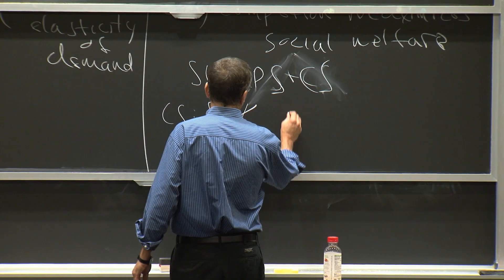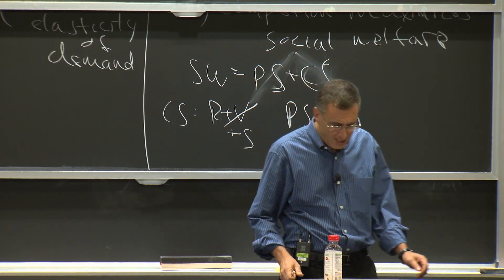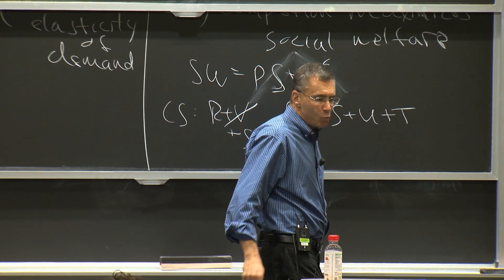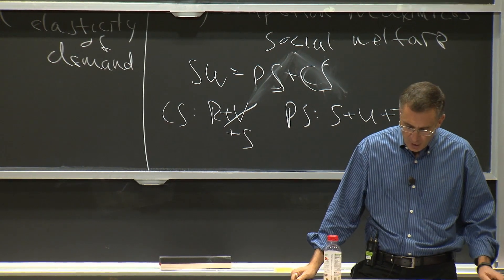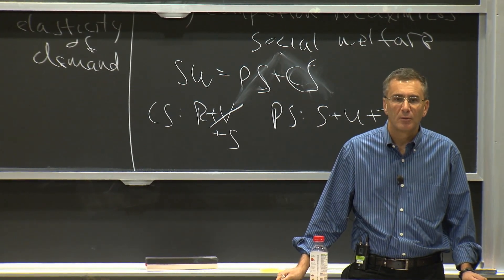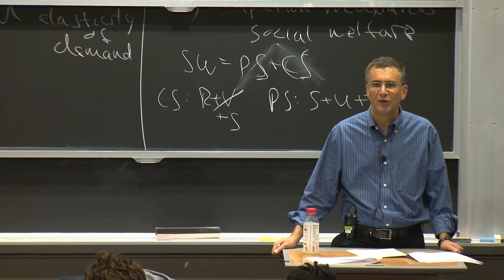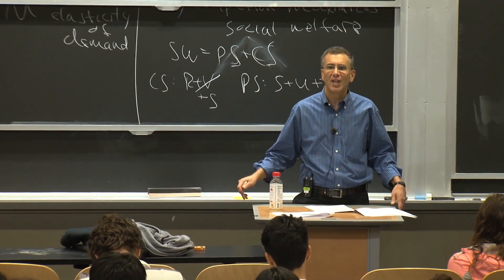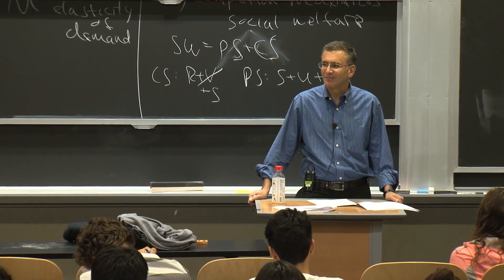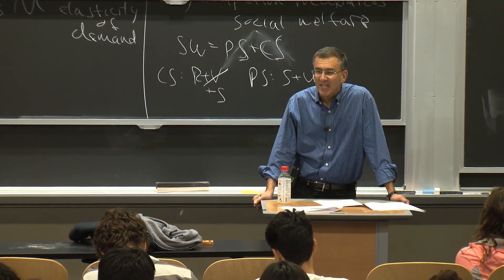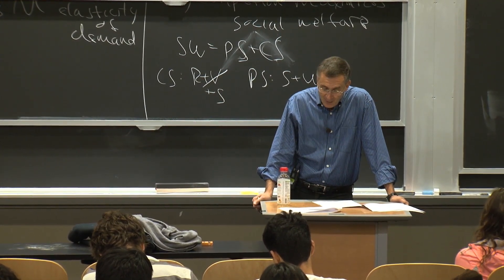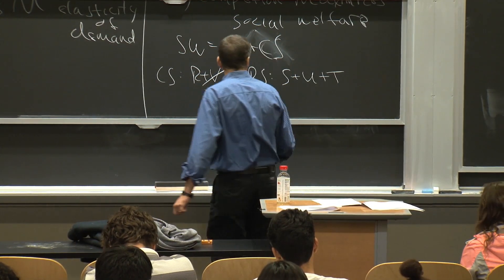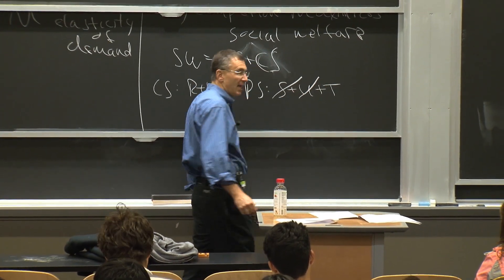What's happened to producer surplus? Producer surplus used to be S plus U plus T. Producer surplus now is T — the area under the price line above the supply curve. So producers have lost S and U and are left only with T.